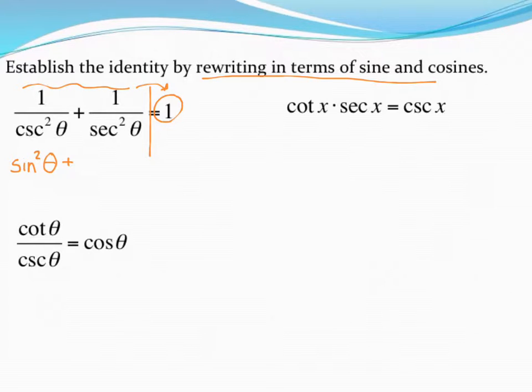Looking at my identities chart, I see that 1 over secant is the same thing as cosine. And that squared would just carry along with it. So I end up with sine squared plus cosine squared. Hopefully I recognize this as a Pythagorean identity. Sine squared plus cosine squared is the same thing as 1.